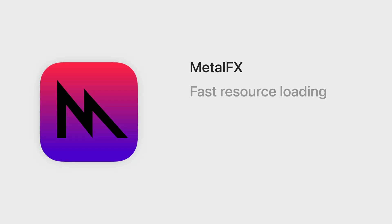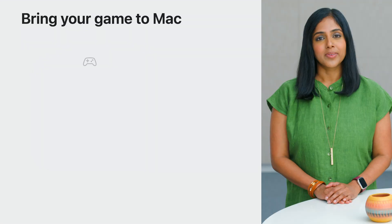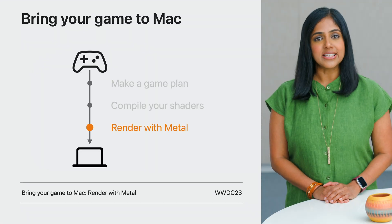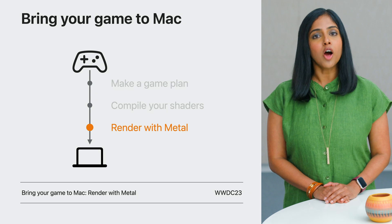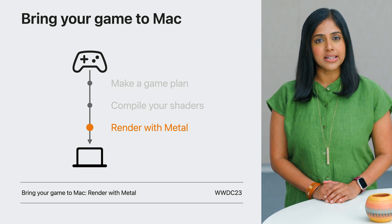It's time to take a look at rendering with Metal. Metal 3 provides all of the advanced graphics and compute features, including Metal effects, fast resource loading, offline compilation, mesh shaders, and ray tracing used by modern high-end games, which makes converting your graphics code incredibly straightforward. The third session in the series, Render with Metal, is about how to port your renderer to Metal and get great performance out of Apple Silicon.